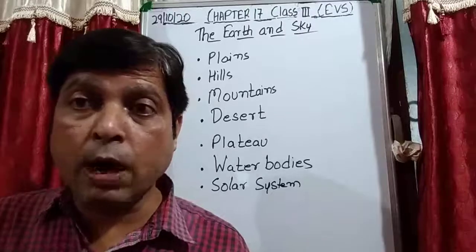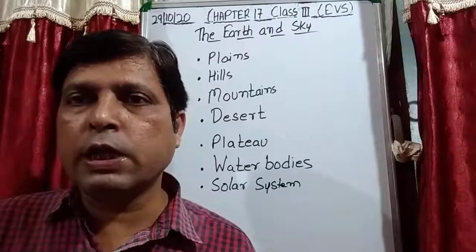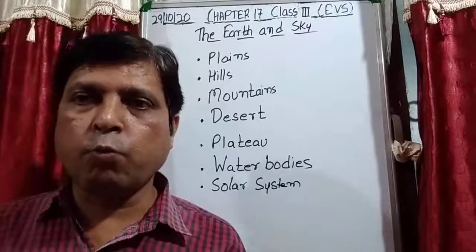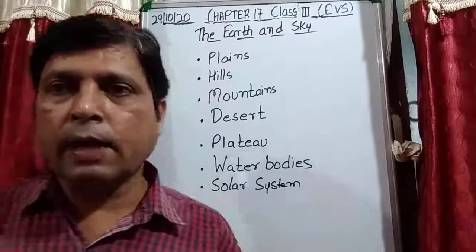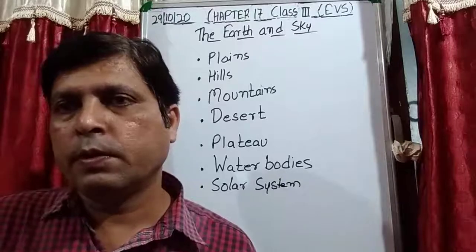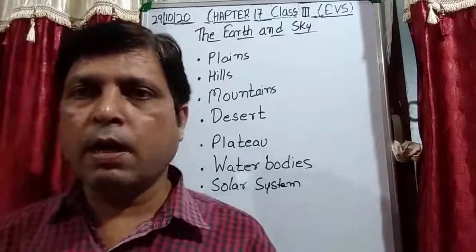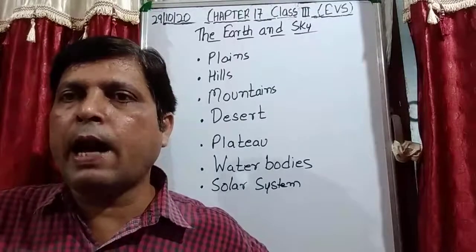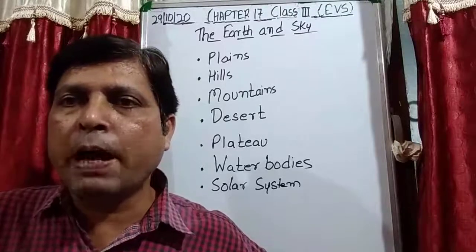Now the question arises: from where does the Moon get its light? When you see the Moon in the sky, you see light coming from it — so where is it getting the light from? That is the light of the Sun which is reflected by the Moon. We already discussed in yesterday's video that an opaque object is one which does not allow light to pass through it.